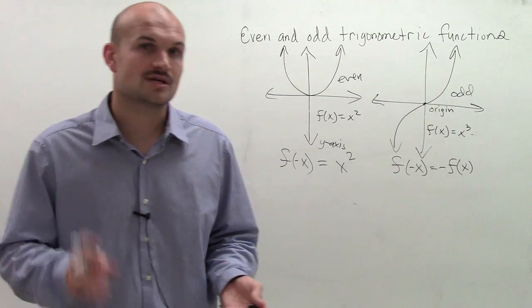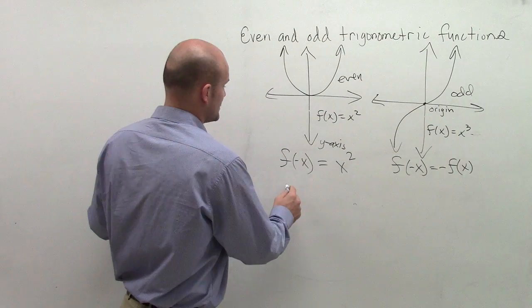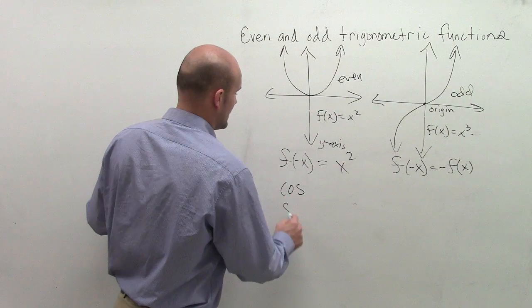So when talking about trigonometric functions, we have two functions that are, what we say, even. And that is the cosine and the secant.